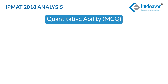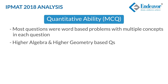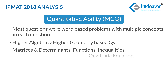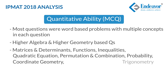The next section is Quantitative Ability MCQ based questions — 40 questions to be answered in 40 minutes. Majority of these were word-based problems having multiple concepts within the same question, with hardly any standalone single-concept question. The breakup was mostly dominated by higher algebra and higher geometry, with around two to three questions from each of: matrices and determinants, functions, inequalities, quadratic equations, permutation and combination, probability, coordinate geometry, and trigonometry.